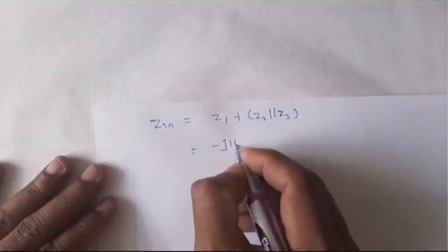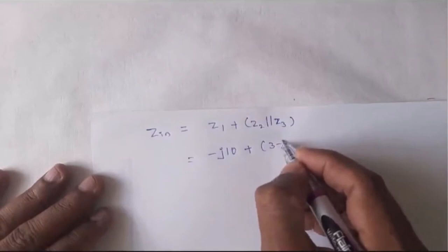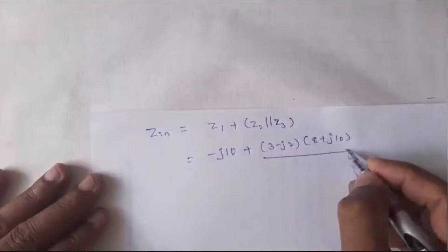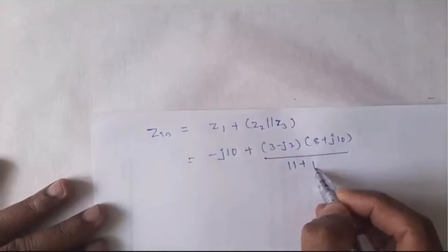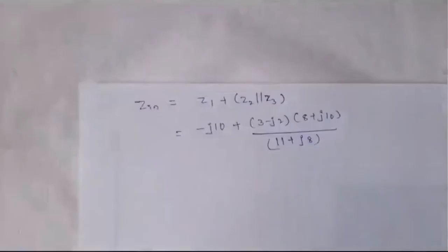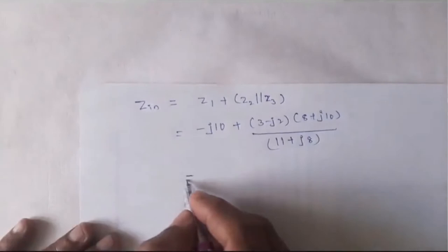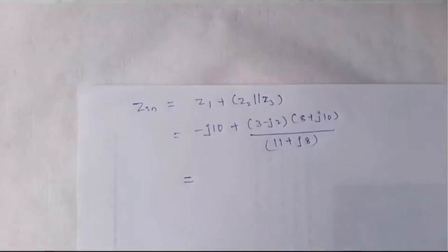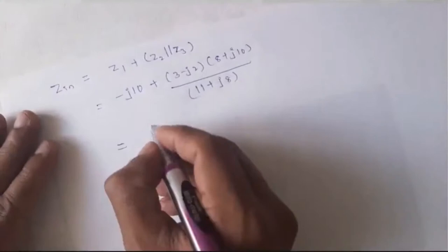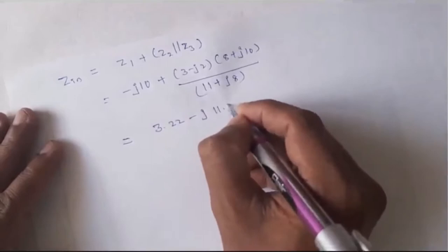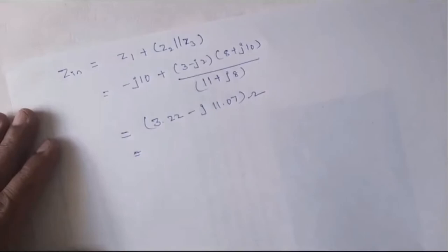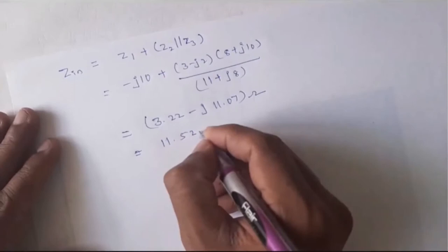Substituting the values: Z1 is minus j10, Z2 is 3 minus j2, Z3 is 8 plus j10. The parallel combination gives a denominator of 11 plus j8. Solving the full expression yields 3.22 minus j11.071, which in polar form is 11.5295 at an angle of minus 73.774 degrees. This is the input impedance Zin.